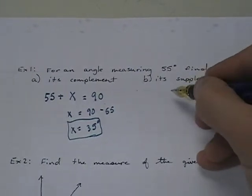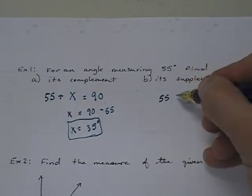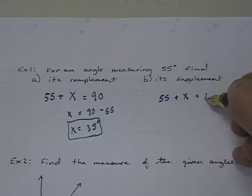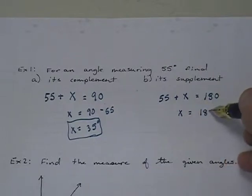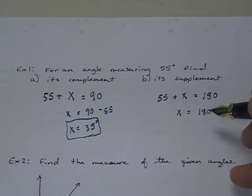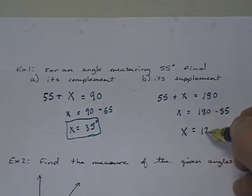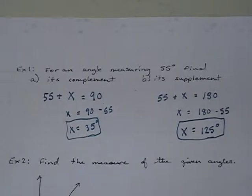So the supplement of 55, very similarly, we write an equation: 55 + x, and this time it's equal to 180. And again, subtract 55 from both sides, so we end up with 180 - 55. And most people skip this first step and go straight to here and that's fine. And 180 - 55 is 125 degrees. So that's the supplement of 55 degrees.